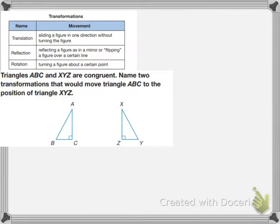So on this next problem, it says that triangles ABC and XYZ are congruent, which means the same. Name two transformations that would move triangle ABC to the position of triangle XYZ.